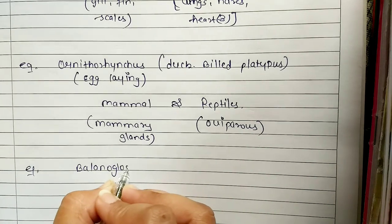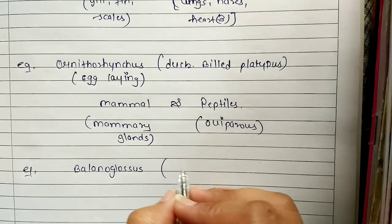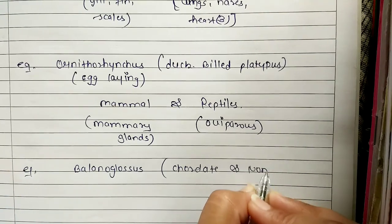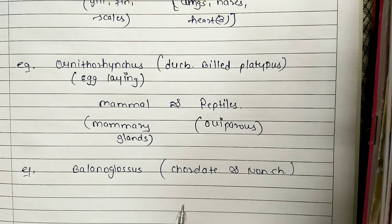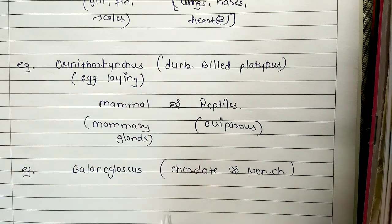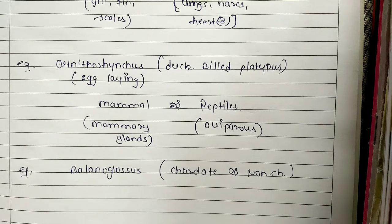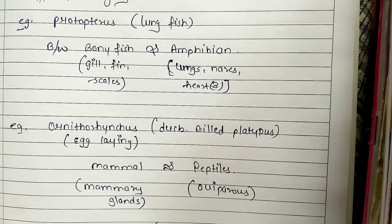Third example: Balanoglossus — it is a connecting link between chordates and non-chordates. Also, Peripatus is a connecting link between Annelida and Arthropoda, and Proterospongia between Protozoa and amoeboid cells. These are the main examples. If it comes in a paper, two or three examples are enough.